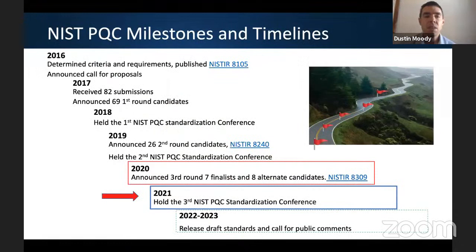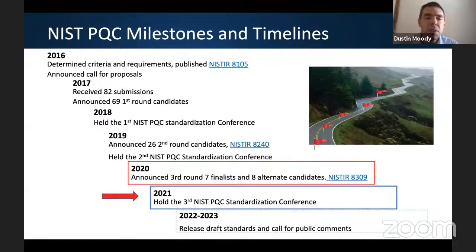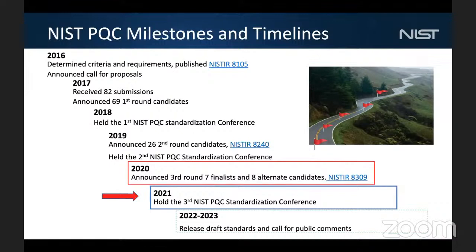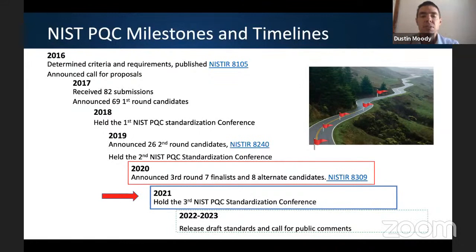At NIST we've been worried about this for quite some time — well before 2016 we held a workshop back in 2015 and had a survey paper out around 2010. But in terms of our competition, it really started five years ago in 2016, when we first announced at PQCrypto in Japan that we would be doing this post-quantum competition and put out the requirements and evaluation criteria. Since then we've had two rounds, received a large number of submissions. Right now we're in the middle of the third round, with 15 algorithms still under consideration. For each of the previous two rounds we've issued reports — NISTIR 8240 and 8309.